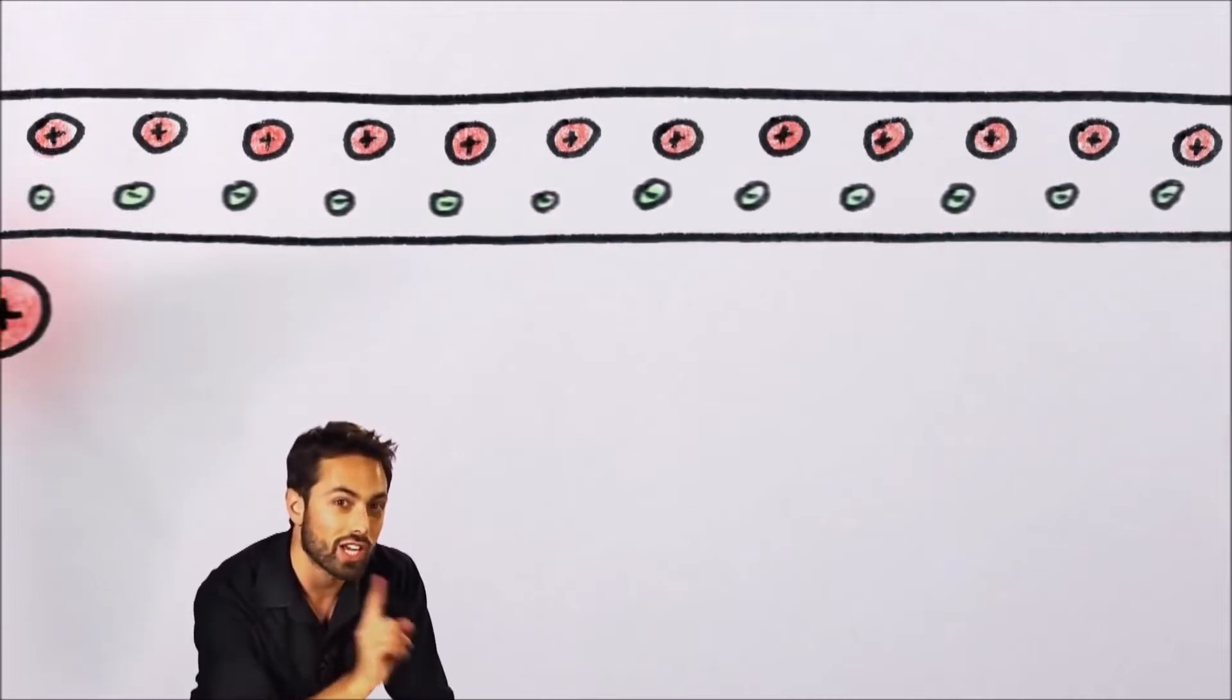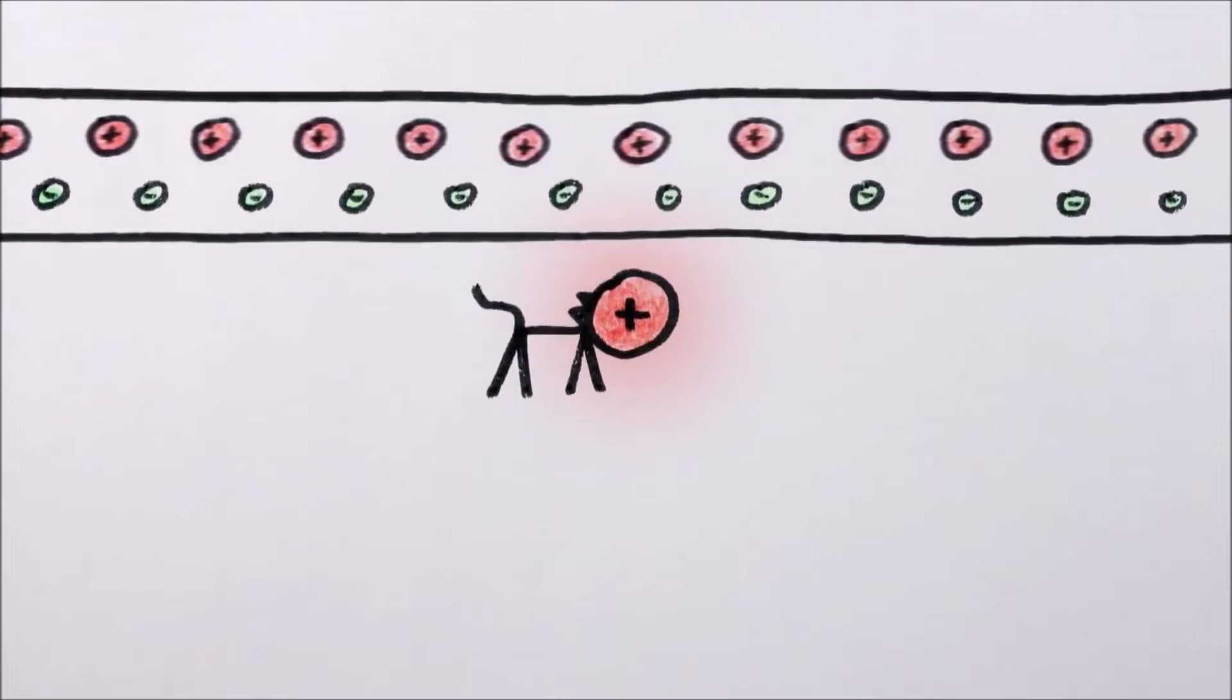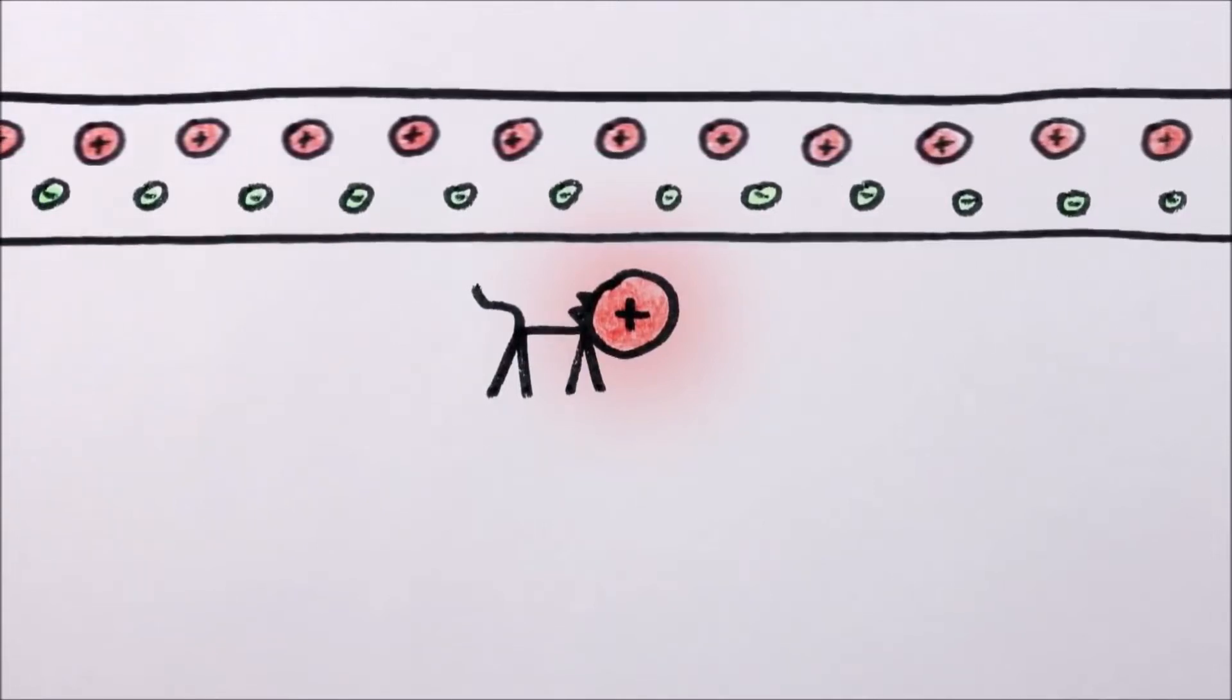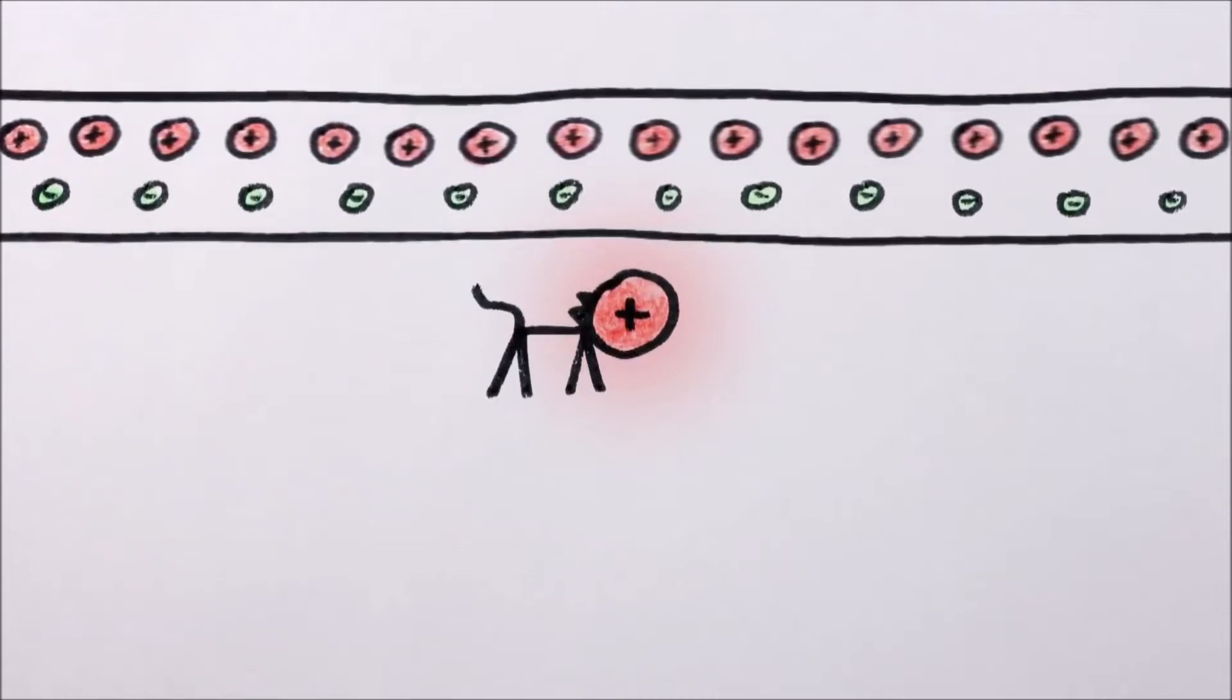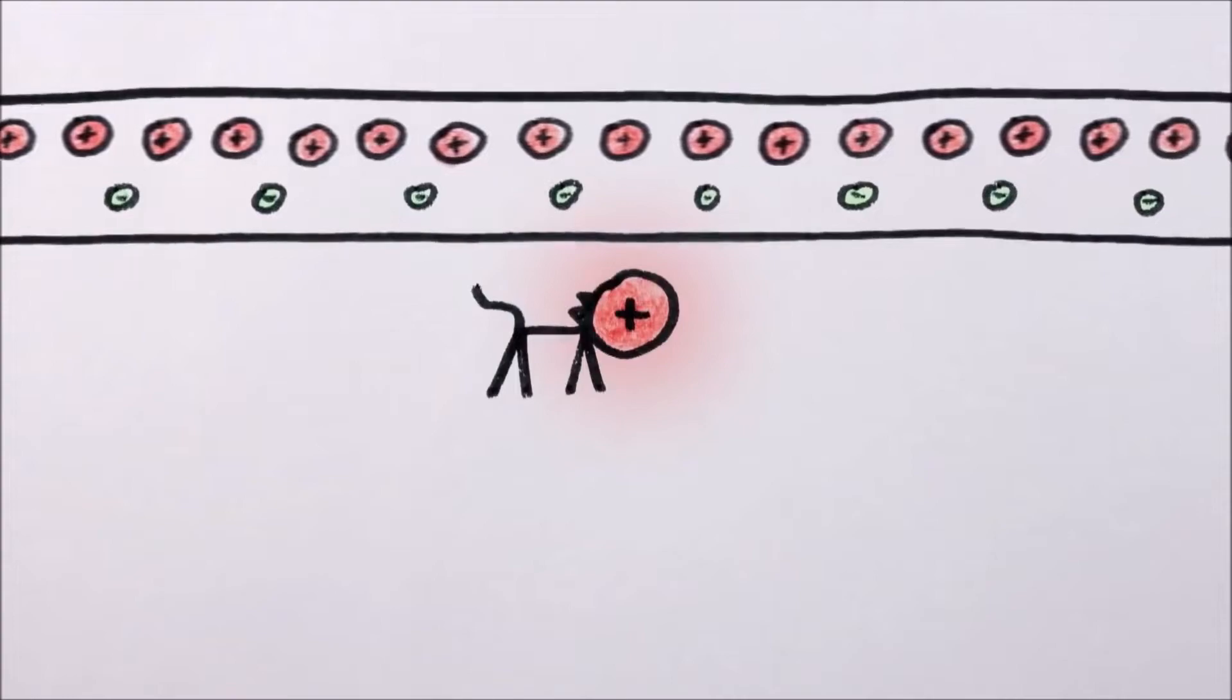But consider the same situation in her frame of reference. In the cat's frame of reference, the positive charges in the wire are moving, so according to special relativity, their separation will be ever so slightly contracted. Also, from this perspective, the electrons aren't moving, so they'll be more spread out than before.